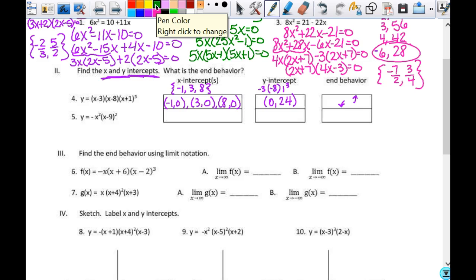So number 5. I'm going to look at the zeros first. That gives me a 0 and a positive 9. So my x intercepts then are at 0, 0 and at 9, 0.